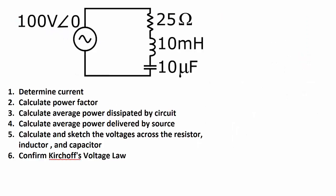Specifically, I am going to determine the current in the circuit, which I'll denote as I. I'm going to calculate the power factor, the average power dissipated by the circuit, as well as the average power delivered by the source. I'm going to calculate and sketch the voltages across the resistor (Vr), the inductor (Vl), and the capacitor (Vc). And finally, I will confirm Kirchhoff's voltage law — that the sum of the resistor voltage, inductor voltage, and capacitor voltage should add up to the source voltage, which is 100 volts with a phase angle of zero degrees.